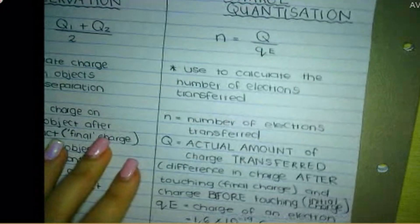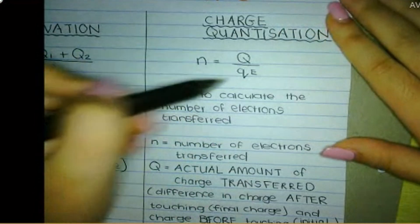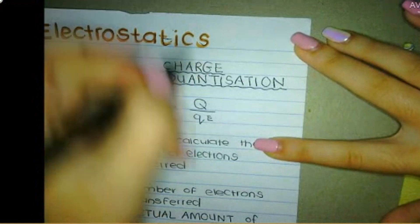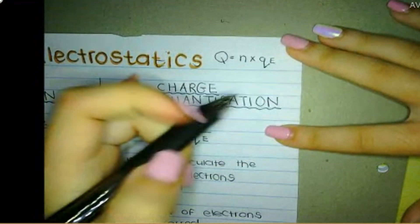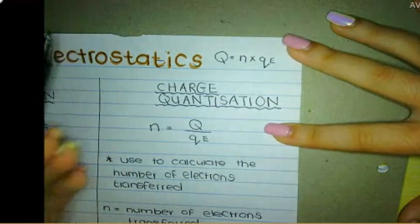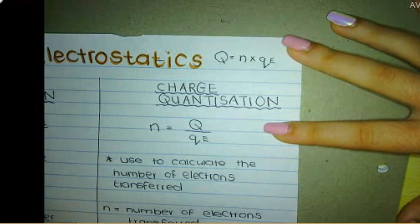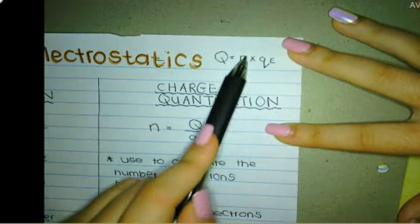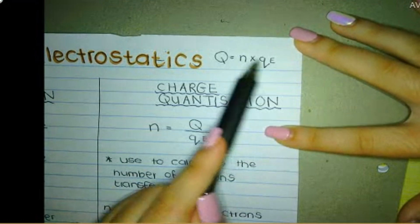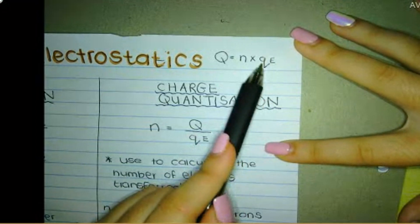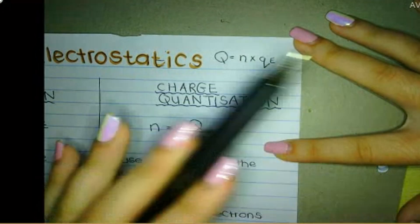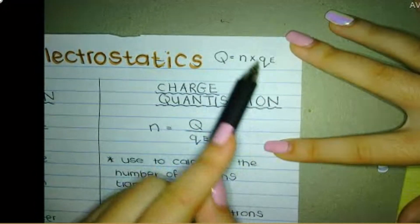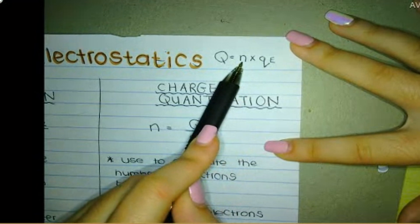We're going to look at this formula quickly. If I rearrange it to isolate Q, you get Q is equal to N times QE. N is the number of electrons — one electron, two electrons, one million electrons — so it's a whole number, an integer. QE is the charge on one electron, so QE is basically a constant: 1.6 times 10 to the negative 19. Any object in the universe will have a charge equal to the charge on an electron multiplied by a whole number.